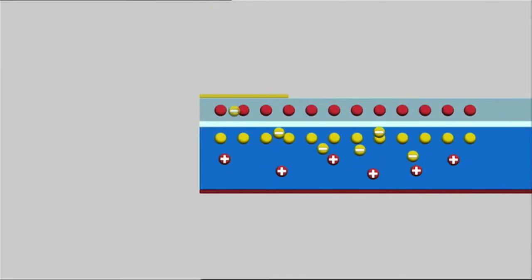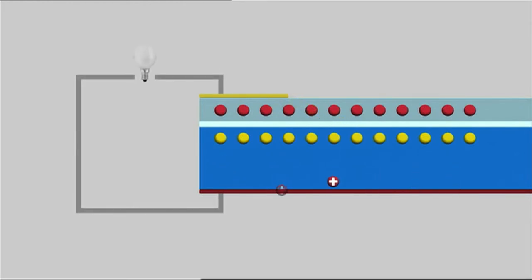At the interface between positive and negative charge layers, the free charge carriers created by the light are released. This generates an electric current.